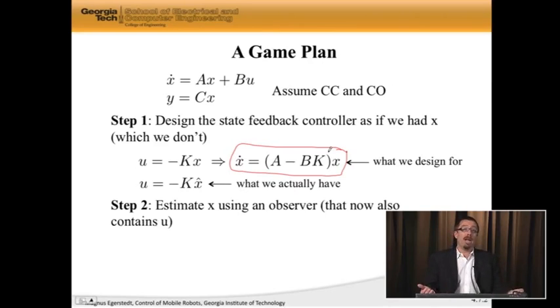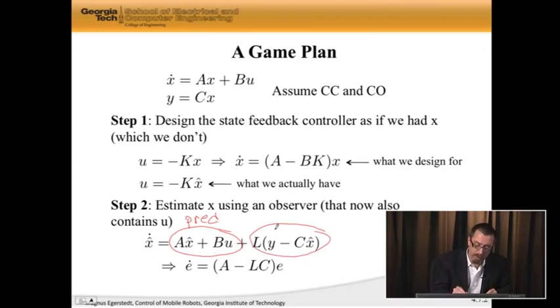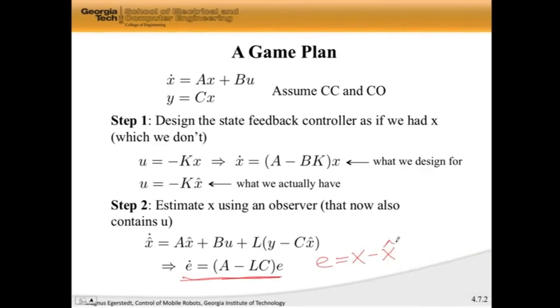Step two, of course, is I'm going to estimate x using an observer in order to get this x hat. The big thing that we should note now is that previously, we didn't have a u term in the observer dynamics. Now we do have a u term that we need to take into account, but it turns out that it's very simple to do that. I build my predictor, and the predictor part now contains both an Ax hat and a Bu term, because the predictor is just a copy of the dynamics. Then I have my corrector part, which is this error between the actual output and what the output would have been if I had x hat instead of x. This structure gives me the same error dynamics here. So I pick L so that my estimation error is stabilized. As before, the error is the actual state minus my estimated state. This is my game plan.